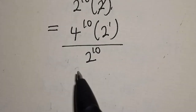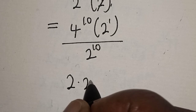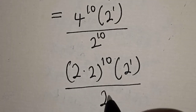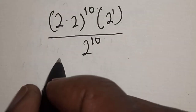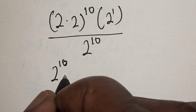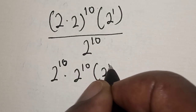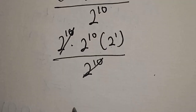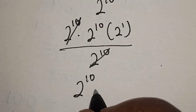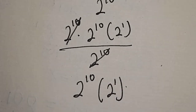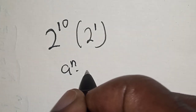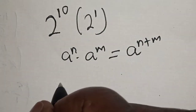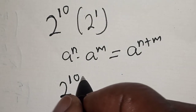Now let's expand this. 4 is 2 multiplied by 2, so this becomes 2 multiplied by 2 raised to power 10, bracket 2 raised to power 1, divided by 2 raised to power 10 bracket 2 raised to power 1. The 2 raised to power 1 in the bracket will cancel. We are left with 2 raised to power 10 multiplied by 2 raised to power 1. Remember the rule: A raised to power N multiplied by A raised to power M equals A raised to power N plus M. So this is 2 raised to power 10 plus 1.